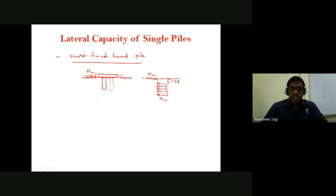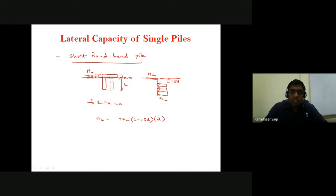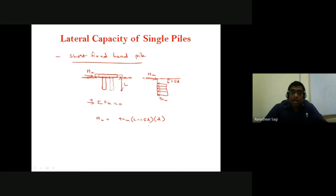With this, I can simply apply net summation of force in the horizontal direction equal to zero, and calculate HU. The length of the pile is L, so HU = 9CU × (L − 1.5D) × D, where (L − 1.5D) is the length over which the pressure acts and D is the diameter — the projected width on which the earth pressure is exerted by the soil on the pile. From this expression we can calculate the ultimate lateral load carrying capacity of the short fixed head pile.